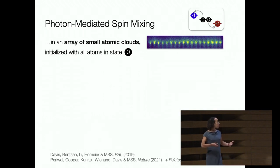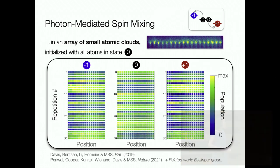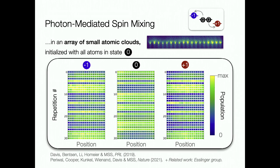When we turn on the light and watch these dynamics in our array of 18 clouds of atoms—all initially in the zero state—over about 30 repetitions of the same experiment, we measure populations in three internal states. We see that sometimes there's more population in the minus-1 state, always correlated with more population in the plus-1 state. This is the first signature of spin mixing dynamics generating correlated atom pairs in the plus-1 and minus-1 states in the cavity.